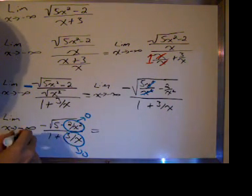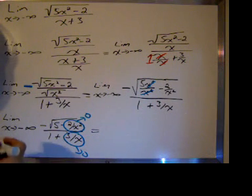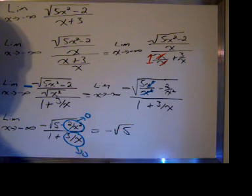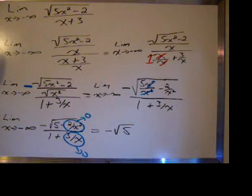So the limit as x goes to negative infinity of the square root of 5x squared minus 2 over x plus 3 is negative root 5. And people like boxes, so I'll box the answer.